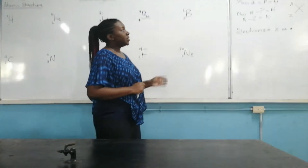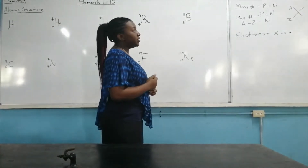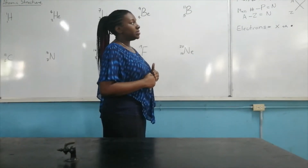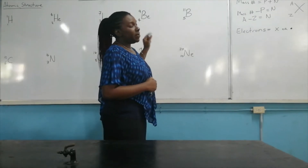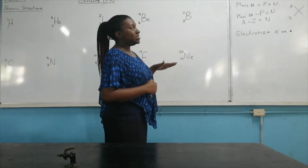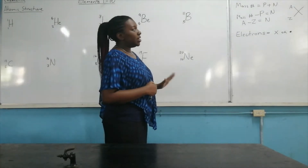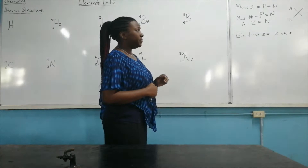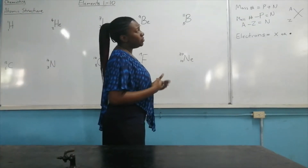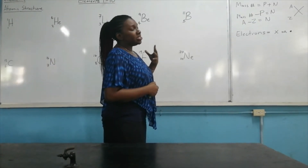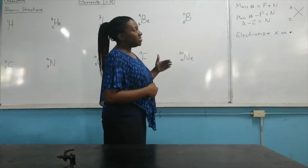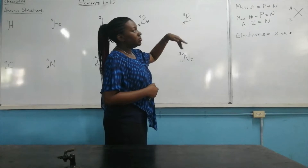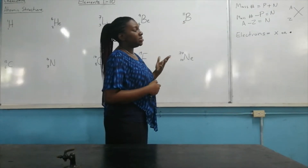Before we do that, we need to remember atomic notation. The big X represents the symbol for the element. The A written to the top left-hand corner represents the mass number, and the Z written to the bottom left-hand corner represents the atomic number or the proton number. To find the number of neutrons, you subtract the atomic number from the mass number: A minus Z equals N, the number of neutrons.